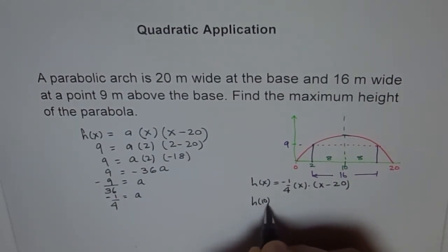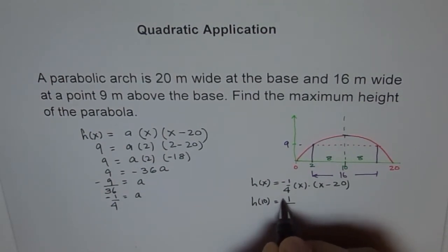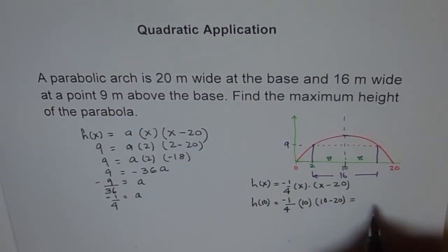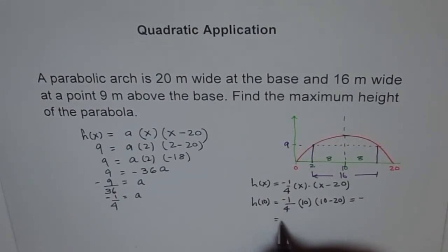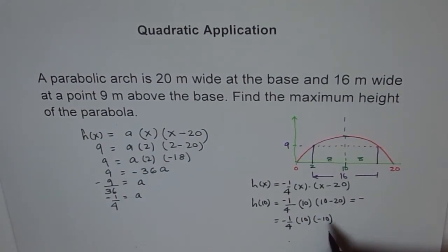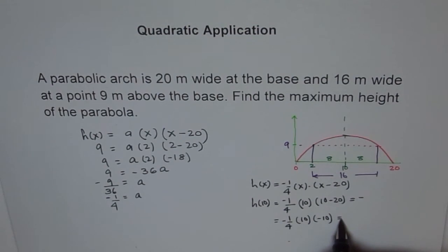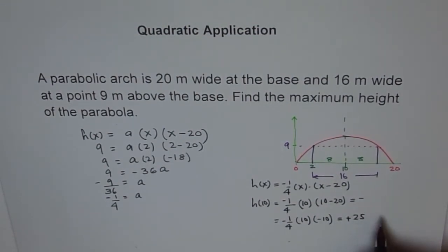So we say h(10) equals how much? Minus 1 over 4, x is 10 for us times 10 minus 20, which is equals to minus, let me write here. Minus 1 out of 4. 10 times 10 minus 20 is minus 10. Well, that makes 10 times 10 is 100 divided by 4 is 25. Minus minus makes it plus. We have plus 25 and unit is meters. Is that okay?